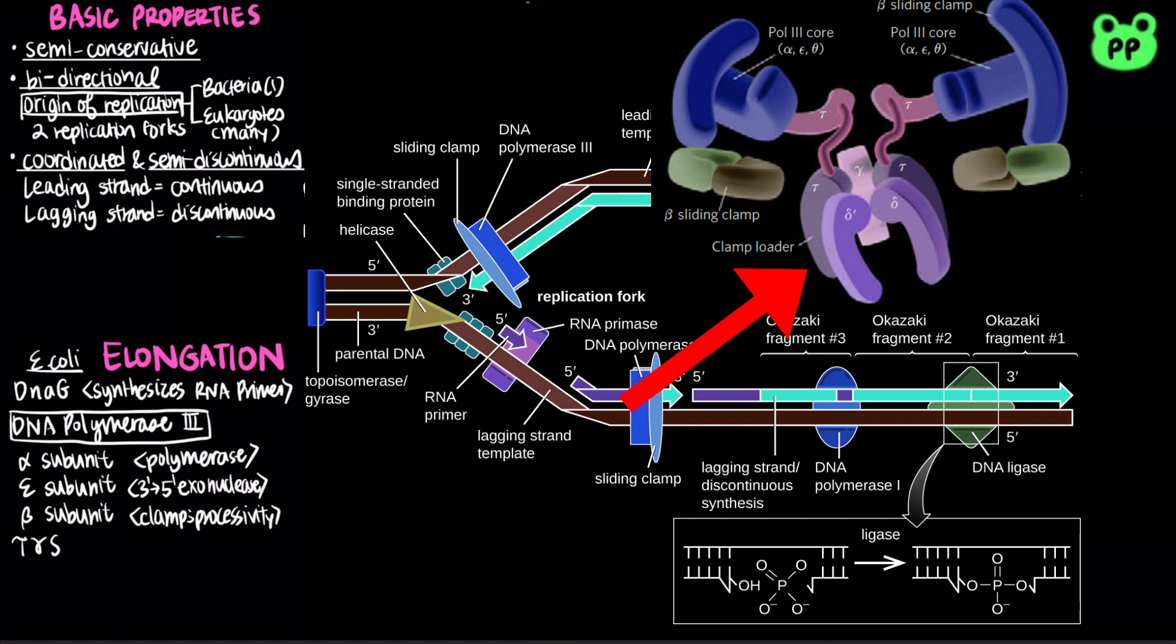Additional subunits tau, gamma, delta, delta prime make up a complex that help loads beta subunit onto the DNA strand, serving as the clamp loader.